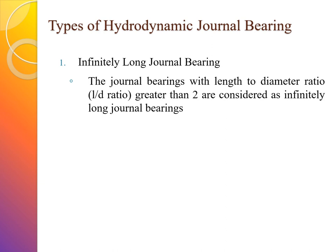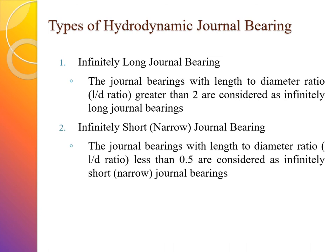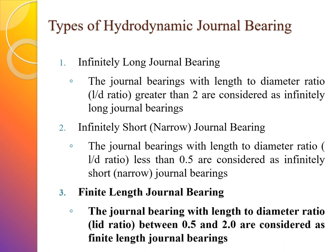The types of hydrodynamic journal bearings are: first, the infinitely long journal bearing, where the length-to-diameter ratio (L/D) is greater than 2. Second, the infinitely short or narrow journal bearing, where L/D is less than 0.5. Third, and most importantly, the finite length journal bearing, where L/D is between 0.5 and 2. This is the most important type in the syllabus, and in the next session we will cover the details and parameters related to finite length journal bearings.